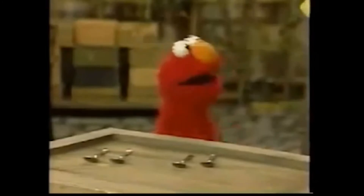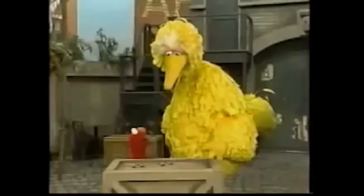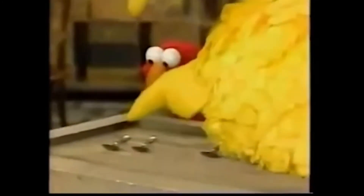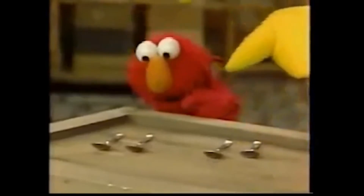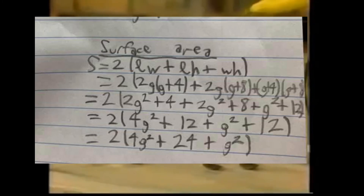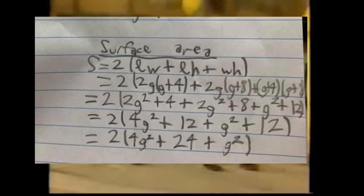Elmo wants to solve the surface area. Okay, Elmo. This is the formula for surface area. You continue to solve until you get 2 times 4G squared plus 24 plus G squared.